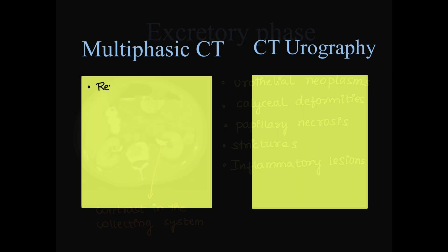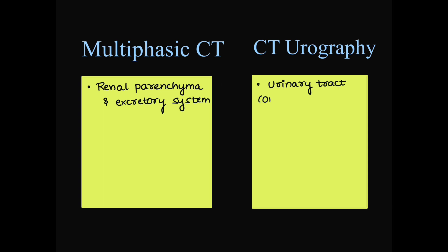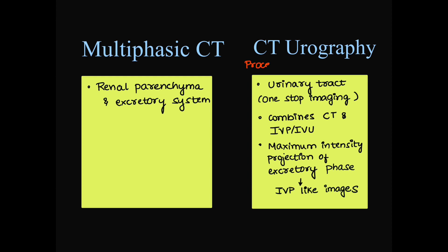This was multiphasic CT. Now, we will see what is the difference between multiphasic CT and CT urography. Multiphasic CT is used for renal parenchyma and excretory system. Urography is used especially for urinary tract and its one-stop imaging modality. It combines CT and IVP. There is maximum intensity projection or MIP used in excretory phase which gives IVP-like images. That's all a CT urography.